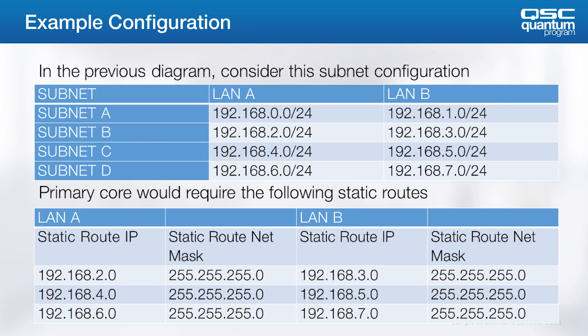A lesson learned from a large project site that required routing and thus the creation of static routes: the client configured subnets counting up from LAN-A to LAN-B. With the even-odd subnet configurations of LAN-A and LAN-B of each device, a static route had to be configured on every device to every other possible subnet. The primary core on the LAN-A 192.168.0.0 subnet had to include static routes to subnets .2, .4, .6, etc. The actual project was much bigger, resulting in 48 static routes for each core on the wide area network, which took hours of work.